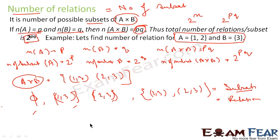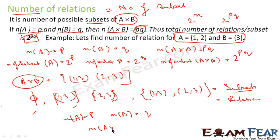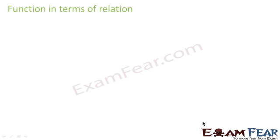To summarize: for any sets where set A has p elements and set B has q elements, the number of elements in A cross B is pq, and the number of relations — or subsets — we can form is 2 to the power pq. Now let's discuss functions in terms of relations.